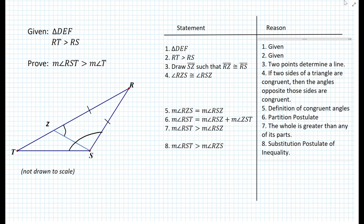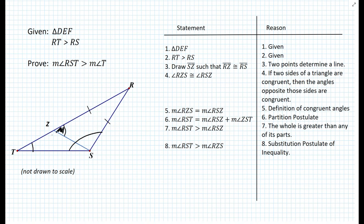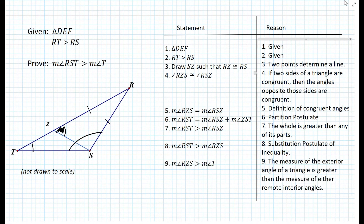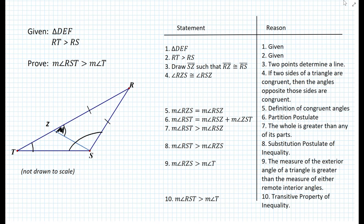By the substitution postulate of inequality, we can substitute to state that the measure of angle RST is greater than the measure of angle RSZ. Now, the measure of angle RZS is greater than the measure of angle T, because angle RZS is the exterior angle of triangle TZS — so the exterior angle is greater than either remote interior angle. From steps 8 and 9, by the transitive property of inequality, the measure of angle RST is greater than the measure of angle T. The proof is complete.